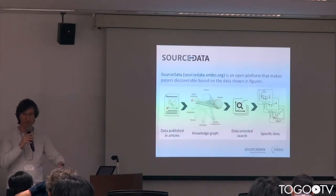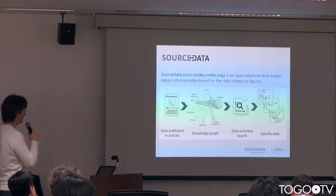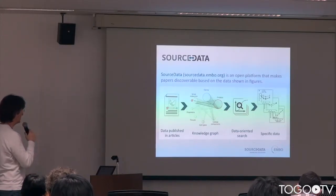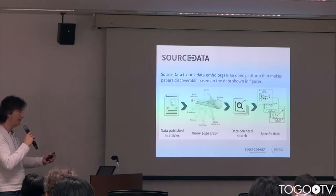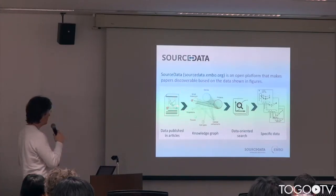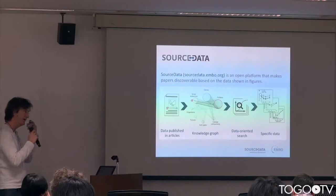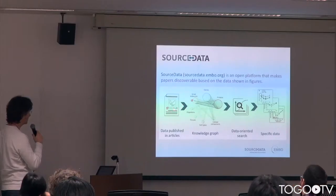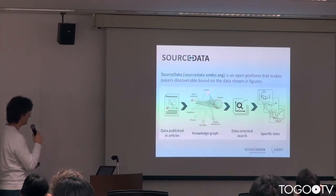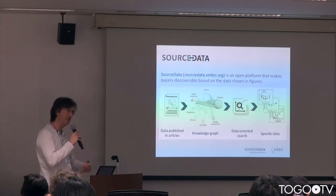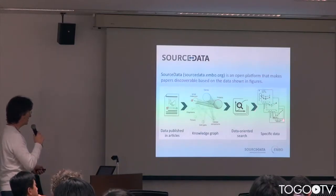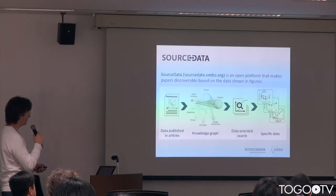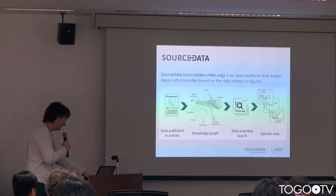This is what we try to address — that's the idea behind the SourceData project, to try step by step to address this difficult problem. SourceData is supposed to be an open platform. It will make the paper discoverable based on the data it contains, so that one has direct access to the data of interest. We take the figures in the paper, represent them in a structured format, put them in a database — represented as a graph, it can be put in a graph database. There is a search interface for users — humans but also machines — such that users can find papers containing the specific data that are of interest for them.